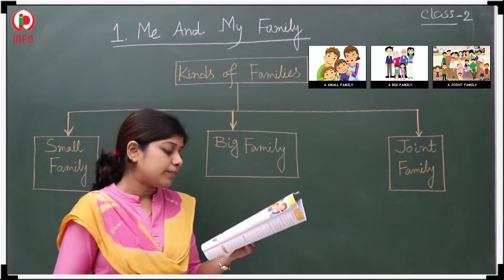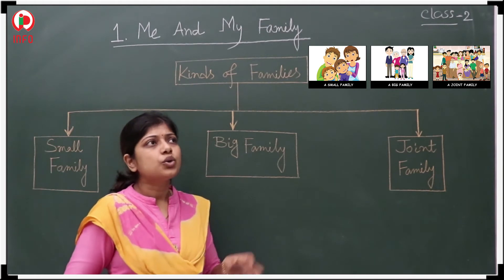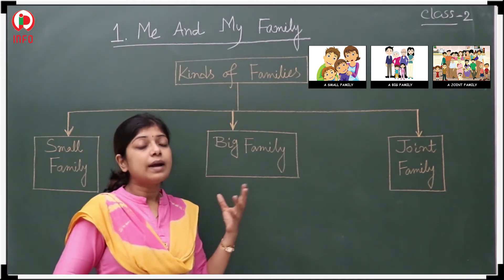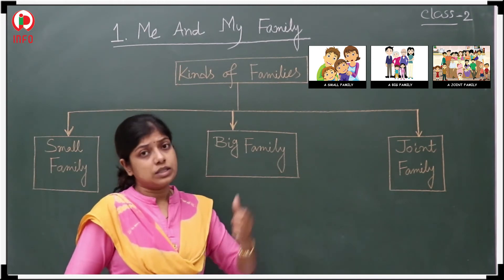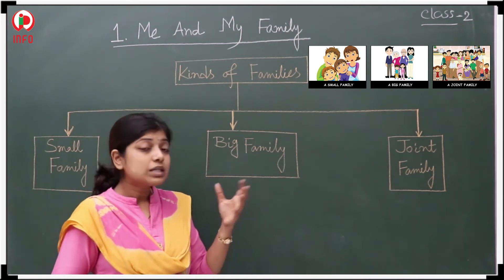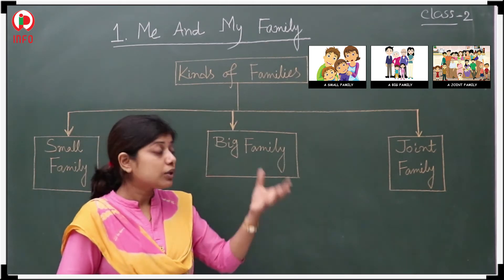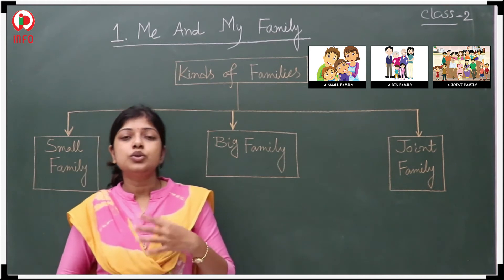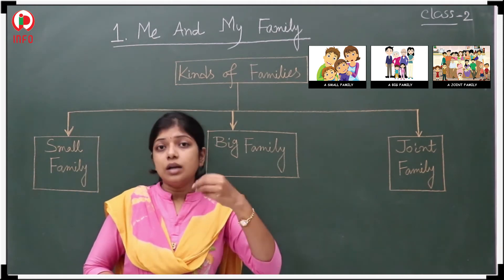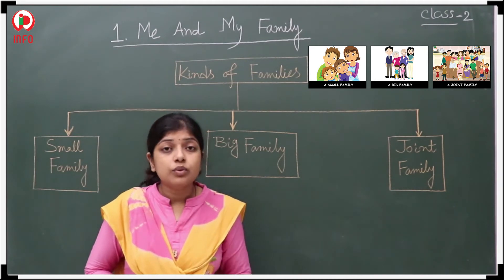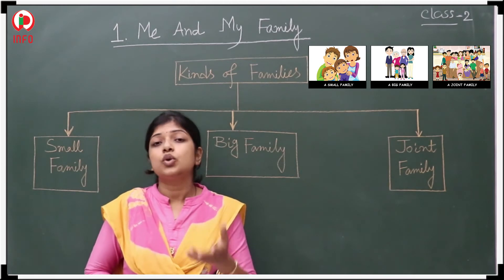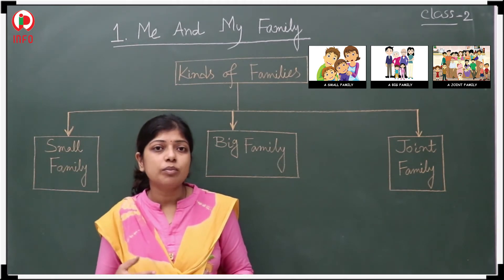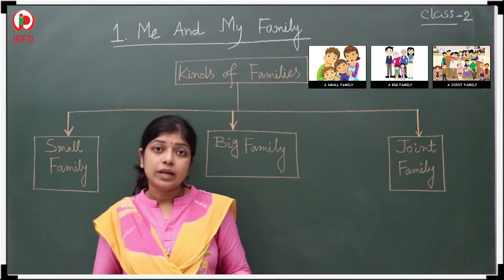Now about the joint family. Joint family is a little different, because it does not mean only the number of children increases. The number of earners also increases — your uncles and aunts are also residing there and earning. So good food quality and good education should not be a problem. But they do face some problems — mainly the adjustment problem.